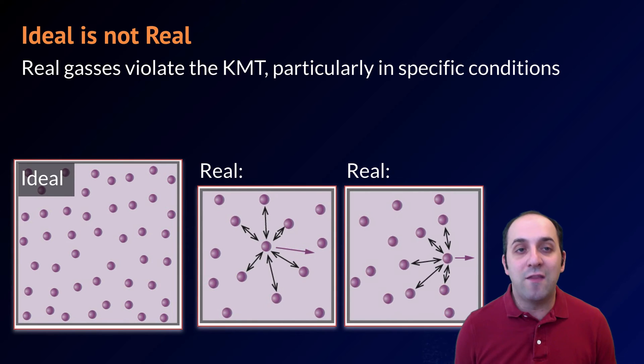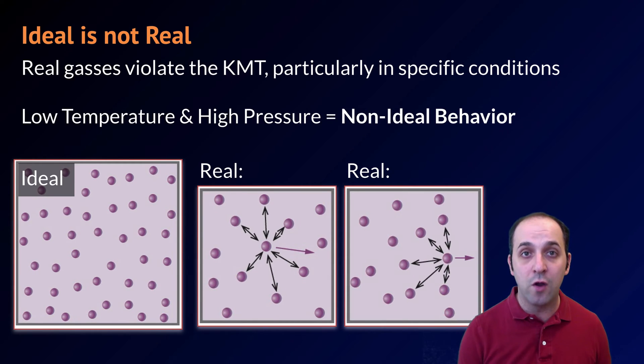So it's important to understand that real gases do absolutely violate these ideal conditions, but only when they've been caused to move very slowly and are really close together. In other words, when they're at low temperatures and very high pressures, that's when we'll see deviation from ideal behavior. But at high temperatures and low pressures, when the gases are moving very quickly and are not squeezed together, we'll see ideal behavior or at least close enough that we can treat the gas like it's an ideal gas.